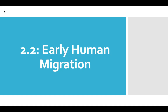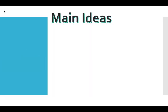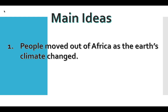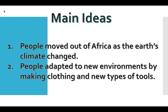Hello, class. This is 2.2 Rural Human Migration. This section has two main ideas: number one, people moved out of Africa as the Earth's climate changed and began to warm up, moving north out of Africa. And two, people adapted to new environments by making clothing and new types of tools.